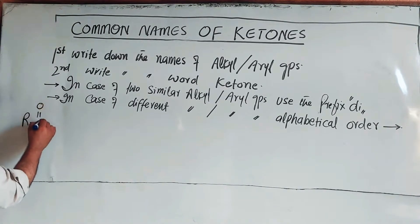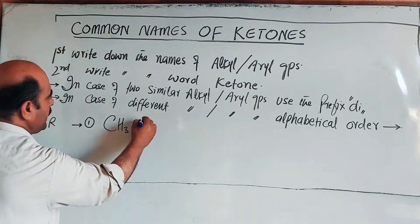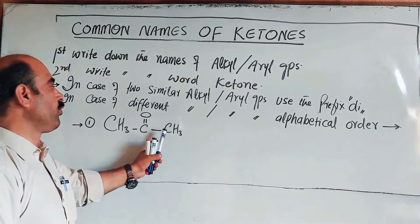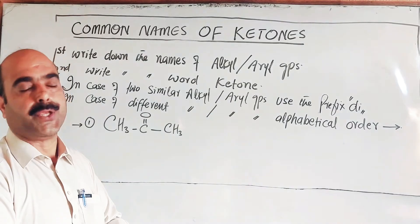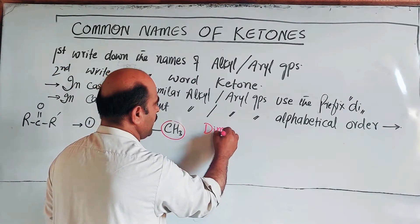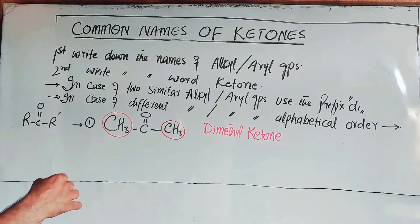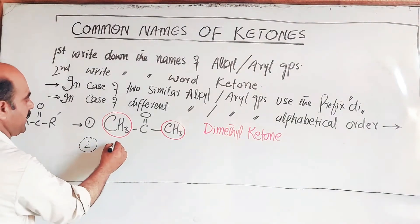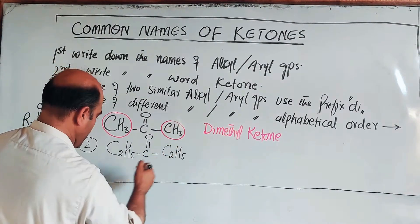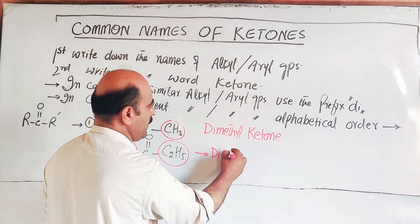The general formula is R-CO-R'. Example number one: R is methyl and R' is also methyl - CH3-CO-CH3. These are symmetrical ketones with two similar methyl groups on either side of the carbonyl functional group. Since two similar groups are present, we use 'di', so the name is dimethyl ketone. Example number two: R is ethyl C2H5 and R' is also ethyl C2H5. Similarly, two ethyl groups - so the name is diethyl ketone.